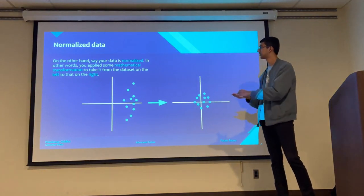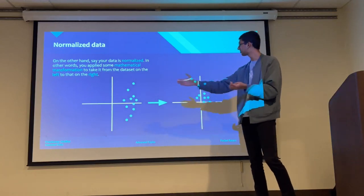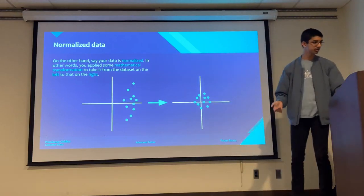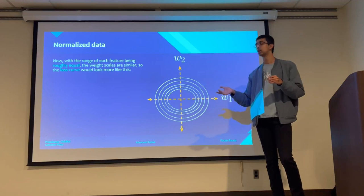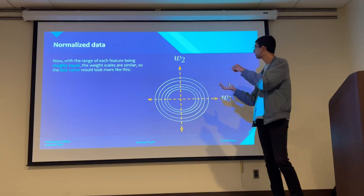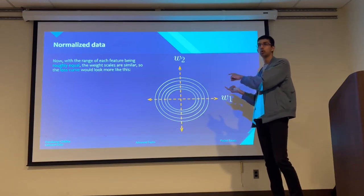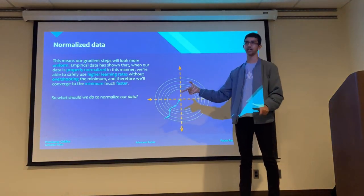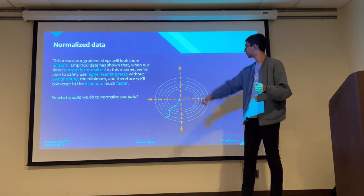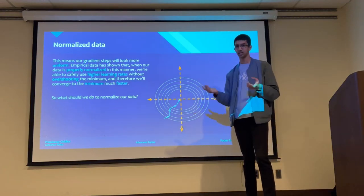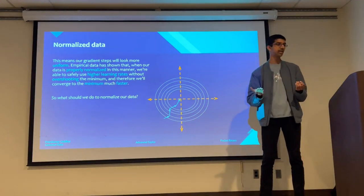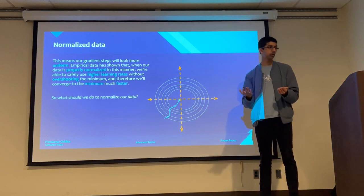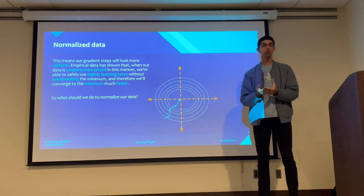What we do instead is normalize our data — apply mathematical transformations like the z-score — taking our data from something with unequal axes to something where both axes have a similar range. The result is the contour graph for the loss function becomes more circular, meaning updates to both weights have similar effects on the loss value. We can use higher learning rates because there's less risk of overshooting the minimum, and therefore converge faster.